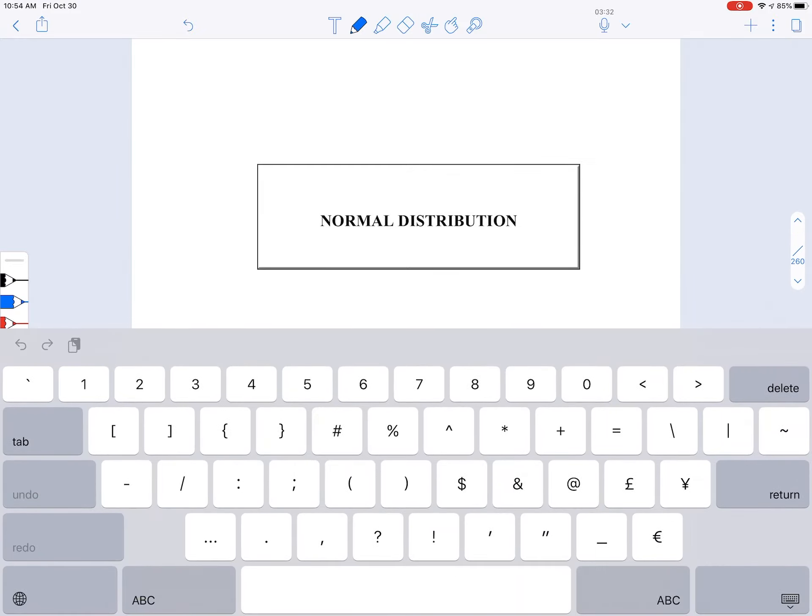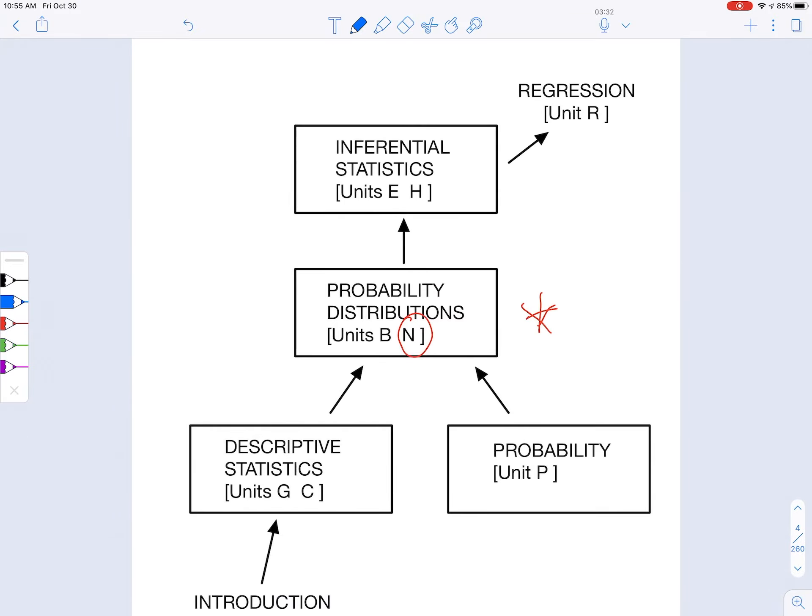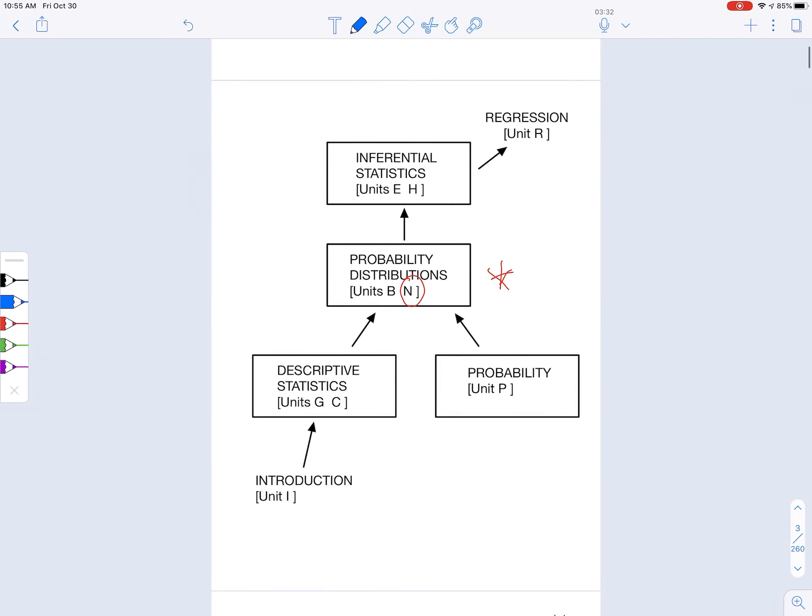First, let's look at where we're at in the course. We are in Unit N, which is right in the middle of the course. This is going to help us when we jump into inferential statistics in the next couple of units, which is the pinnacle of the course. So this is really a pivoting point of the course here.